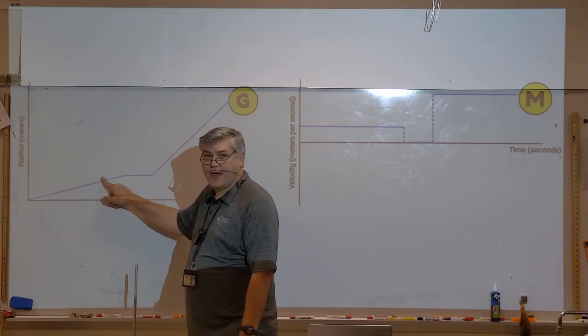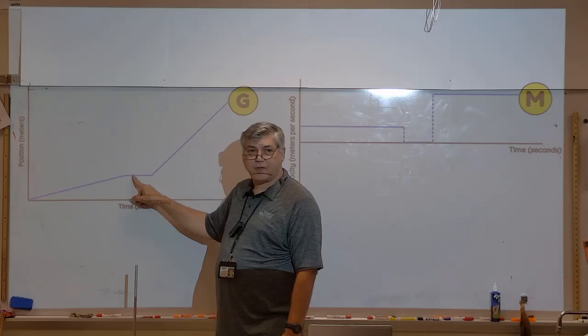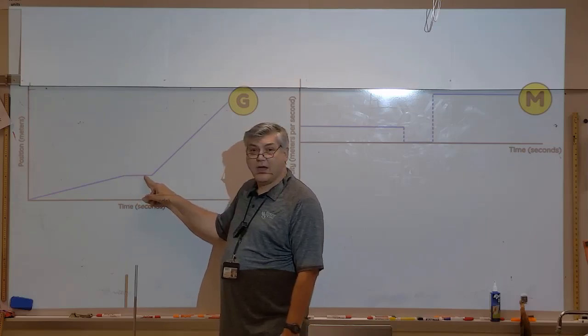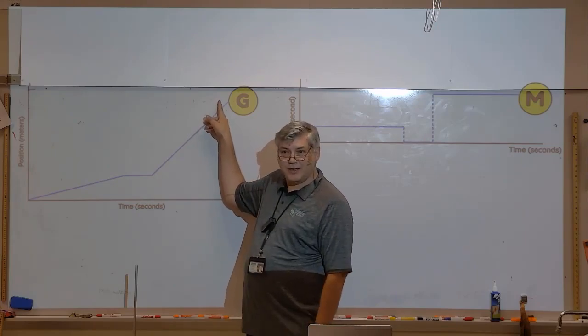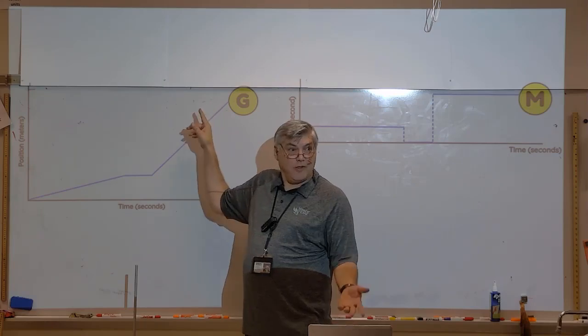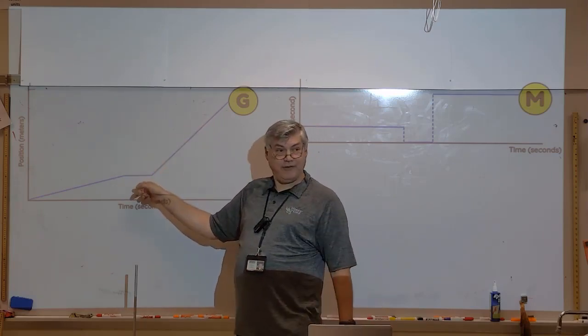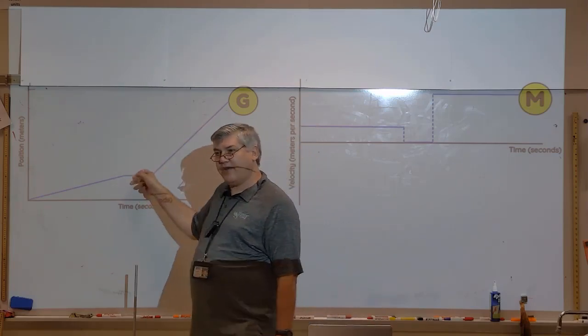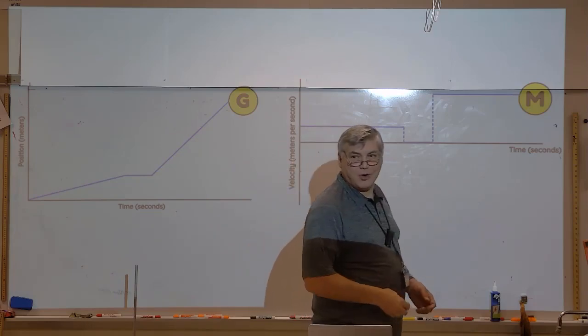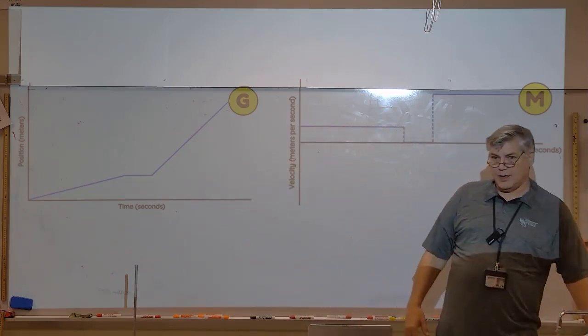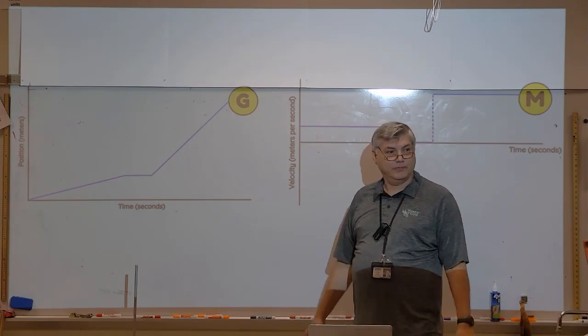Student walking along to class, right? And then they stop to talk to their friends and check their phone. And then the warning bell rings, and now they take off, headed for class faster, right? Would that description fit this graph? Yeah. So whenever you look at a graph like that, you should immediately be able to tell what's happening or make up a story about what's happening. It should just come to you. Boom. Okay?